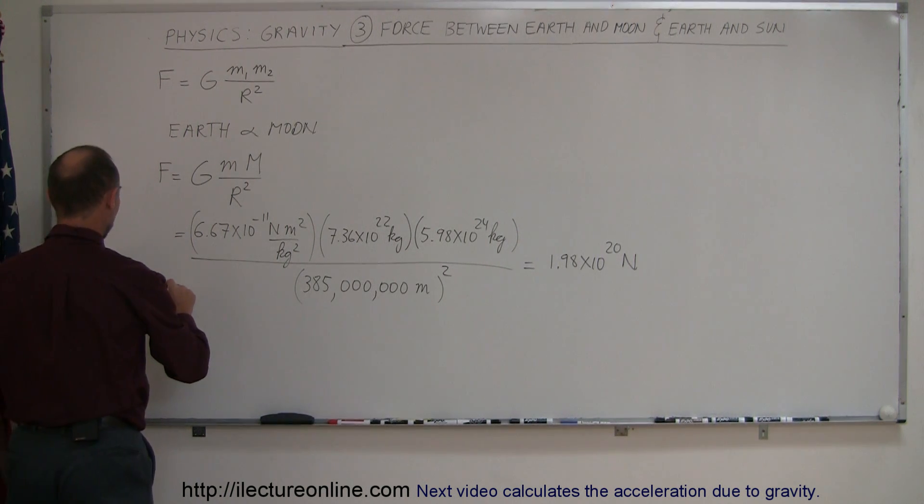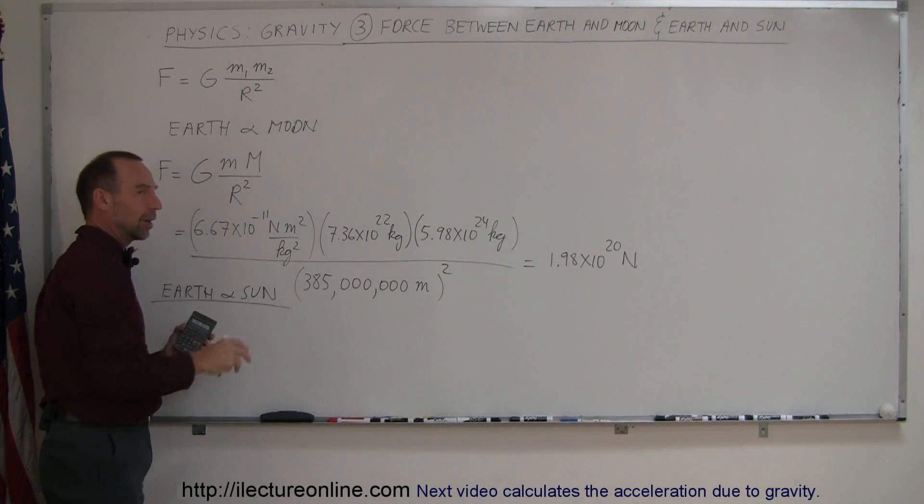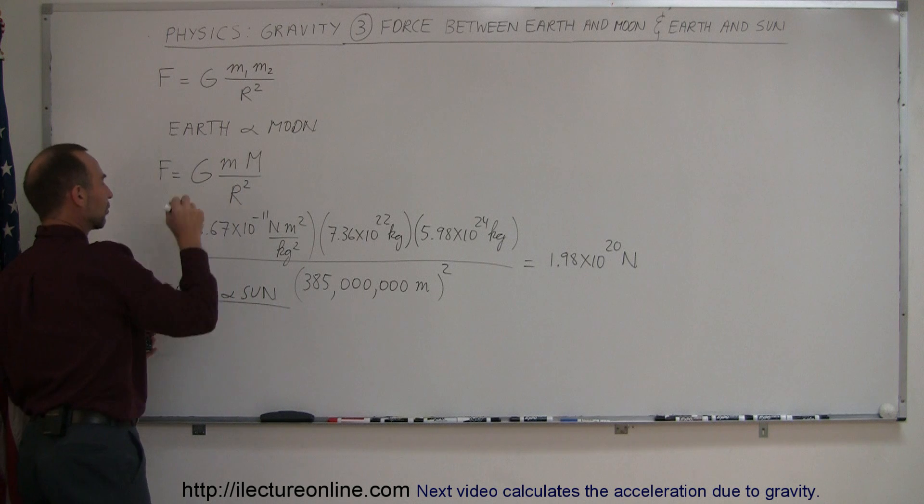Now let's do the Sun and the Earth. We use the same equation, but now the big M belongs to the Sun, the small m belongs to the Earth. What will we get?